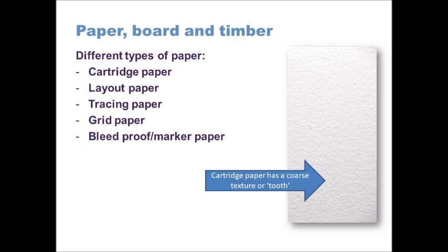Grid paper should be quite familiar from maths, where it's used to create graphs and geometric shapes. It's characterized by a familiar grid or graph pattern — normally a light squared pattern on the surface, with squares broken down into five millimeter or ten millimeter increments for easy mathematical calculation. There are other forms too, such as isometric grid paper, which has lines set at 30 degrees rather than 90 degrees, allowing you to draw isometric drawings.